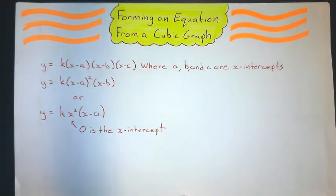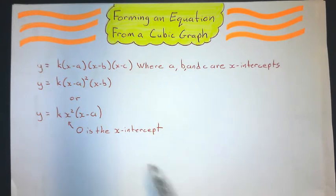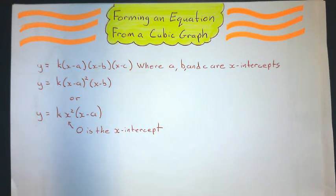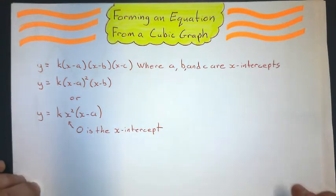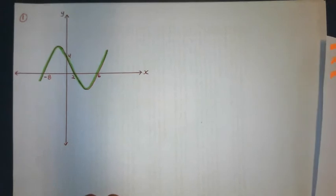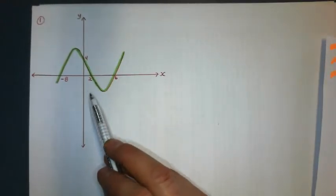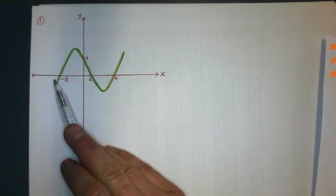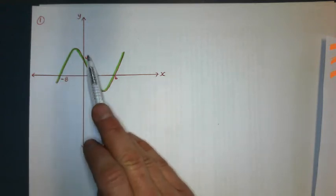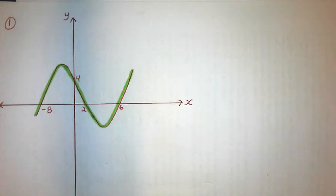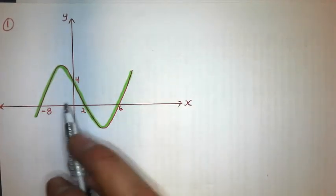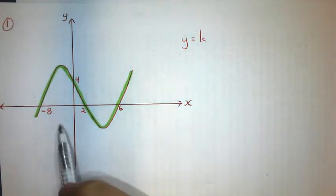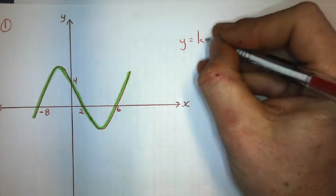Those are the three forms we're looking at today. Let's look at our first example. The only numbers I've put on here are the intercepts — the x-intercepts and the y-intercept. This graph has three x-intercepts, and they are negative eight, two, and six.